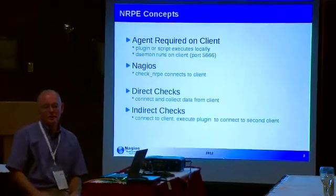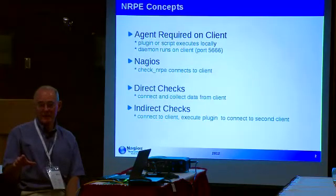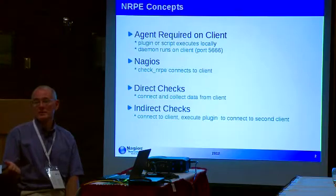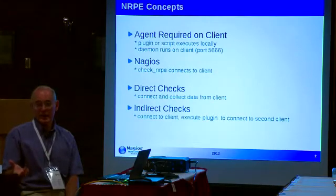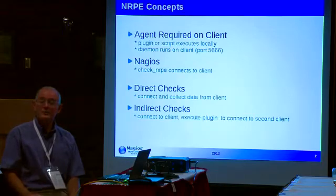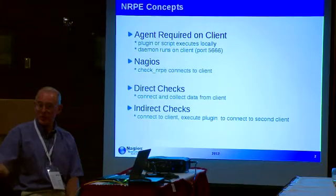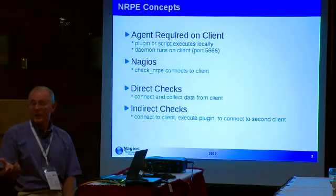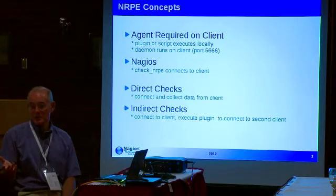First, let's talk about some basic concepts. NRPE means that you must place an agent on the Linux box. That agent is going to have a daemon listening on port 5666 so that communication can come from the Nagios server. Nagios is going to use one plug-in — check_NRPE — to connect to the remote box and execute plug-ins locally. The plug-ins execute locally on your client, which means you need to have the plug-ins on the client. The Linux box needs not only the NRPE daemon, but also the plug-ins or scripts you want to execute on the client.